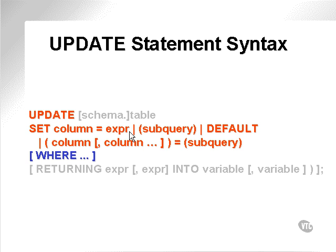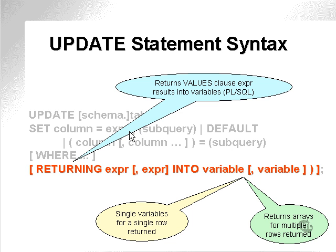The WHERE clause in the UPDATE statement is also very important because it allows me to filter — either update a single row, a subset of rows in a table, or the entire table by simply leaving the WHERE clause out altogether. The RETURNING clause is used to return values calculated in the UPDATE statement into variables, either as single variables or arrays. Let's go into some examples using the UPDATE statement.